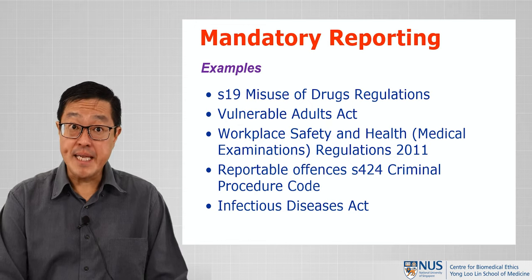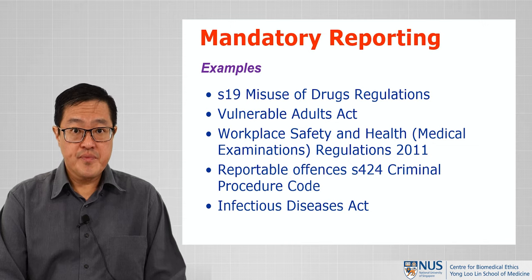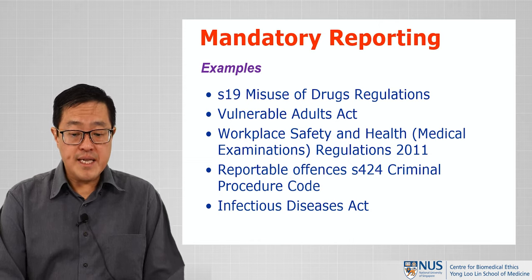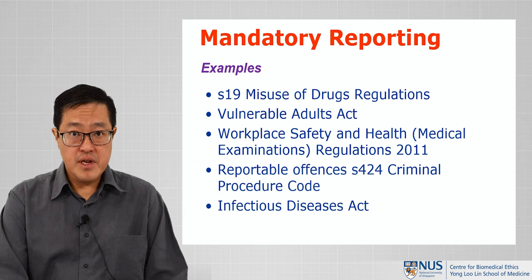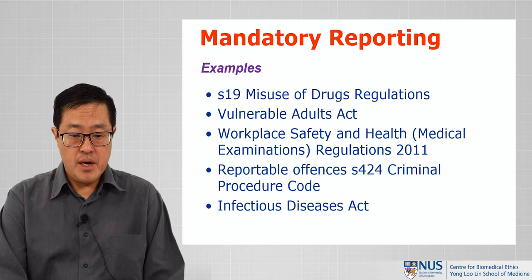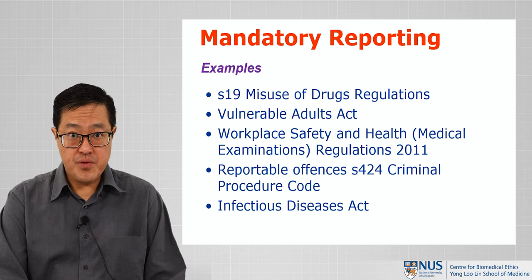Here are some examples: Section 19 Misuse of Drugs Regulations, the Vulnerable Adults Act, Workplace Safety and Health Regulations, reportable offences under Section 424 of the Criminal Procedure Code, and the Infectious Diseases Act. These all have provisions which make reporting mandatory, or there is the power of certain people to access the patient's records.